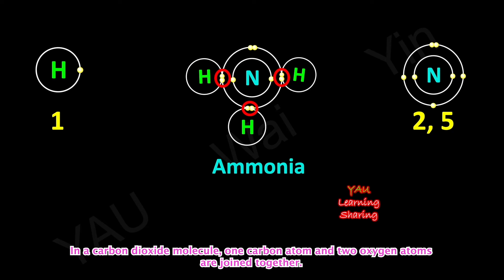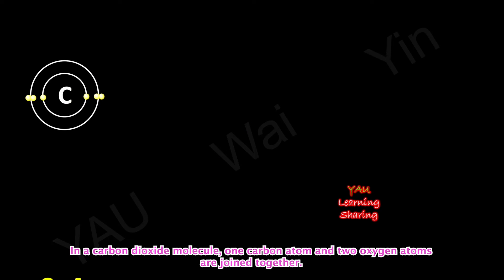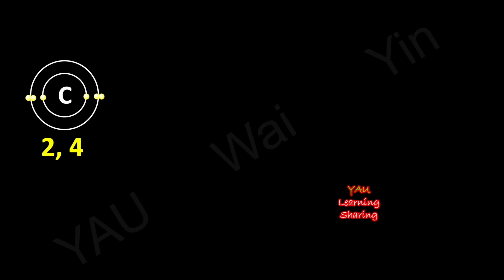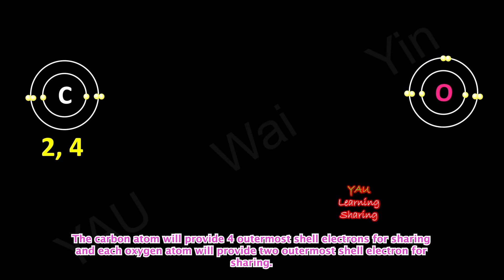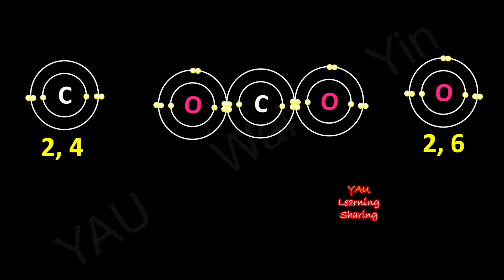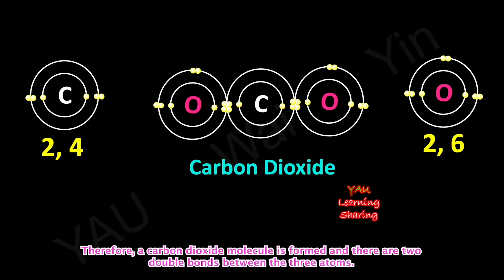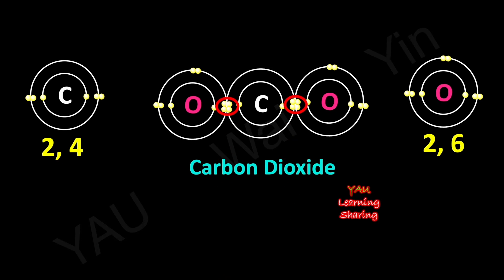In a carbon dioxide molecule, one carbon atom and two oxygen atoms are joined together. The carbon atom will provide four outermost shell electrons for sharing, and each oxygen atom will provide two outermost shell electrons for sharing. Therefore, a carbon dioxide molecule is formed, and there are two double bonds between the three atoms.